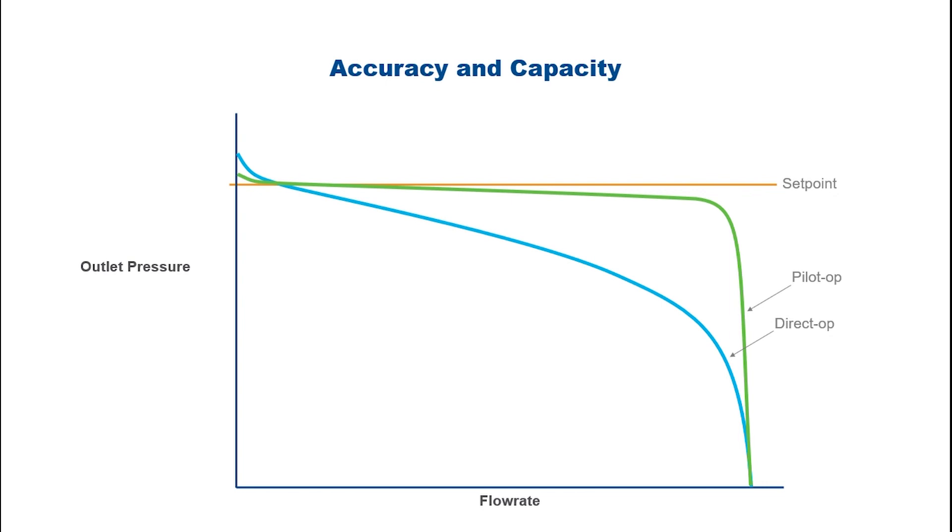Spring-loaded regulators require a much larger decrease in outlet pressure. All applications require some level of accuracy, so even though both products in this example reach the same maximum flow, the spring-loaded regulator has much less useful flow capability.